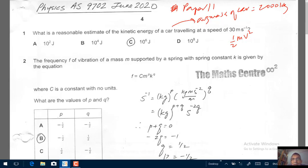So v squared here will be 30 times 30 is 900. So this is about equals to 1000. So an estimate of your kinetic energy will be half 2000 times 1000, which will be 1000 times 1000 will be 10 to the power of 6. Therefore your correct response will be 10 to the power of 6 Joules.